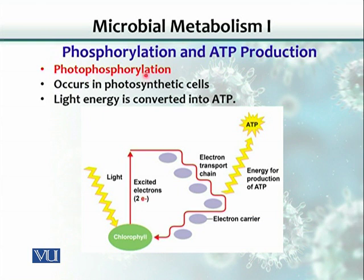The third way of generating ATP is photophosphorylation, where light energy from photons is captured by chlorophyll. The excited electrons are then passed through an electron transport chain, ultimately resulting in ATP production.